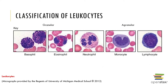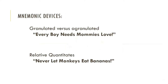Looking at the different types of leukocytes, a useful mnemonic is 'grandpa ben.' Granular leukocytes are basophils, eosinophils, and neutrophils. The agranular leukocytes are monocytes and lymphocytes. Another mnemonic is 'every boy needs mommy's love' — 'every boy needs' represents the granular types, and 'mommy's love' represents the agranular types.